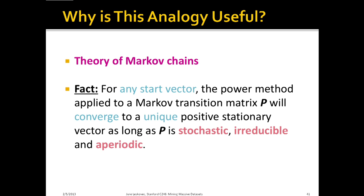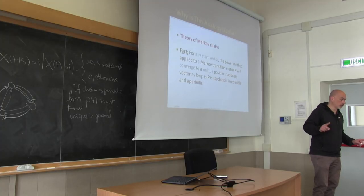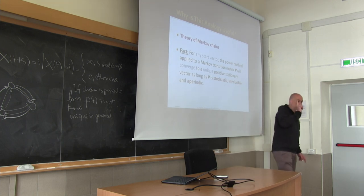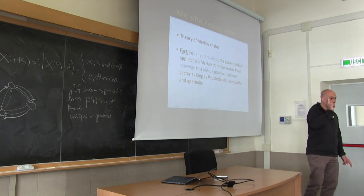If you checked the notes on the website, you know that if the Markov chain is irreducible — the underlying graph is strongly connected — and it is aperiodic — no periodic states — then if you apply the power method, it is going to converge to one single stationary distribution.